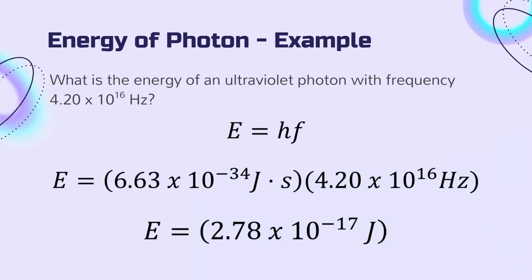Let's take a look at a simple example using this formula. What is the energy of an ultraviolet photon with frequency 4.20 times 10 to the 16 hertz? It's as simple as plugging in Planck's constant, which can be found on the data booklet, and the frequency of the photon in the problem, and finding their product. The energy of this photon will be 2.78 times 10 to the negative 17 joules.